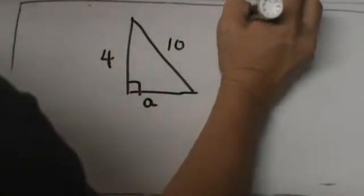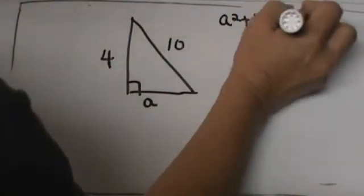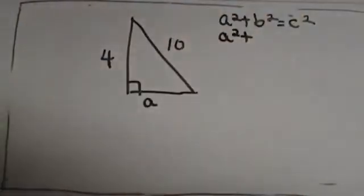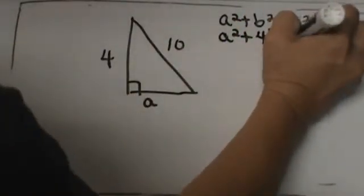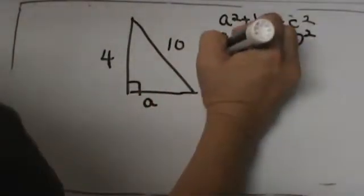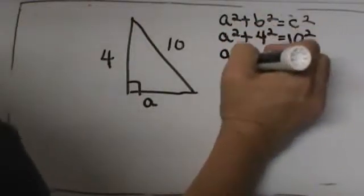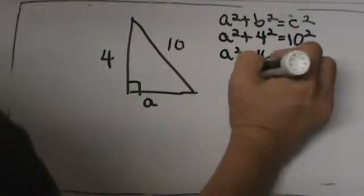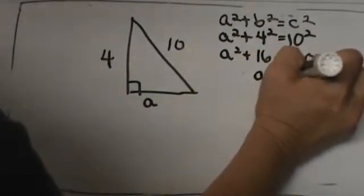Let's write our formula down. A squared plus B squared equals C squared. A we don't know so we are going to leave an A squared in there. B is one of the legs so it is 4 squared, and C is the hypotenuse. So A squared plus 4 squared is 16 is equal to 100. So A squared equals 84.